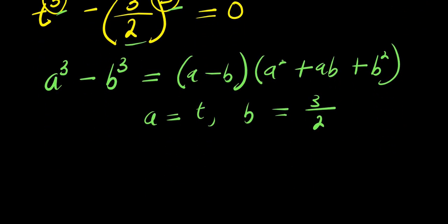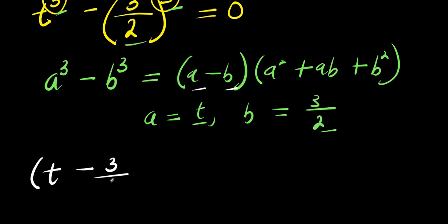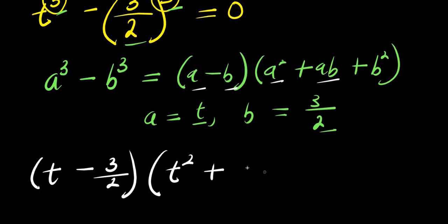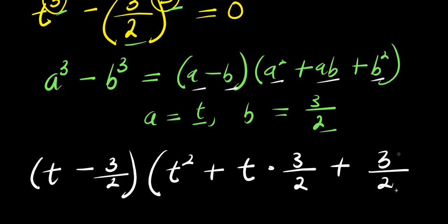Inserting t for a and 3 over 2 for b: for a minus b we have t minus 3 over 2, times a squared which is t squared, plus ab which is t times 3 over 2, plus b squared which is 3 over 2 to the power of 2, and everything equals 0.